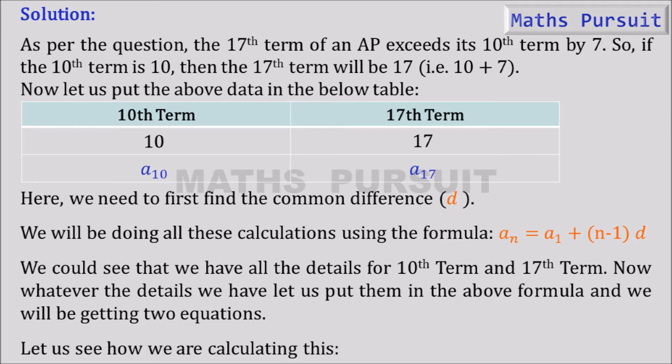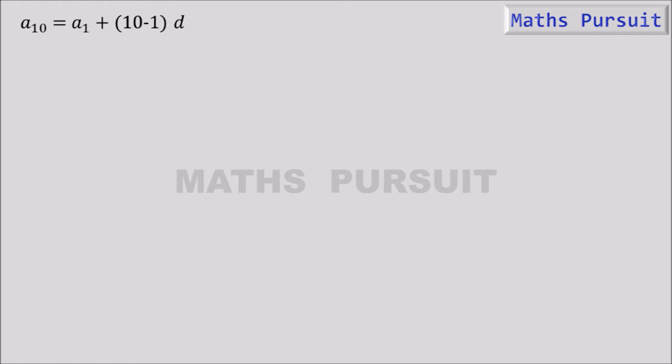Let us see how we are calculating this. a10 is equal to a1 plus 10 minus 1 into d, or 10 is equal to a1 plus 9d. So replacing the value of a10 to 10, and a1 we do not know, and n here n is 10. So 10 minus 1 is 9. So we got 9 into d, or 10 is equal to a1 plus 9d, or a1 is equal to 10 minus 9d. Let us name this one as equation 1.